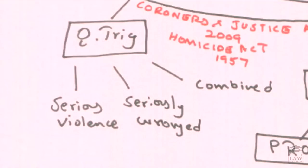Loss of self-control is an evolutionary derivative of the prior defense of provocation. In provocation, the sex and age of the defendant were not taken into consideration, but in loss of self-control these are factors permitted by the court. While voluntary manslaughter is a mitigatory offense to murder, the mens rea element cannot be mitigated unless the qualifying triggers are achieved and the limitations are overcome. The limitations are quite subjective in nature, and habitual characteristics of the defendant may prevent reliance on the defense.